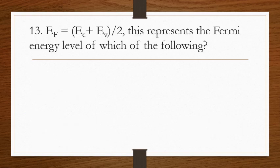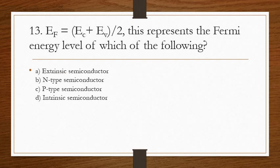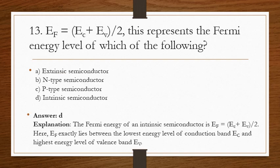The next question: EF = (EC + EV) / 2 represents the Fermi energy level of which of the following? The answer is D. The Fermi energy of an intrinsic semiconductor is EF = (EC + EV) / 2, where EF lies exactly between the conduction and the valence bands.